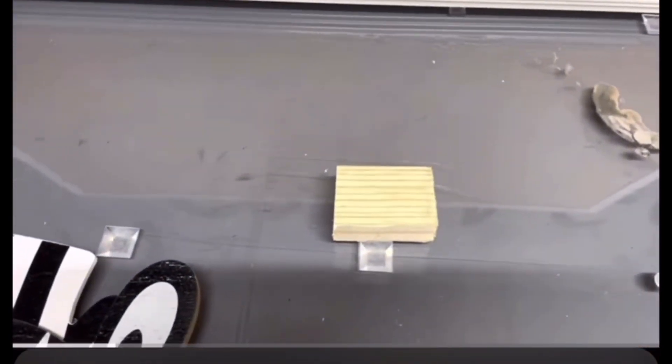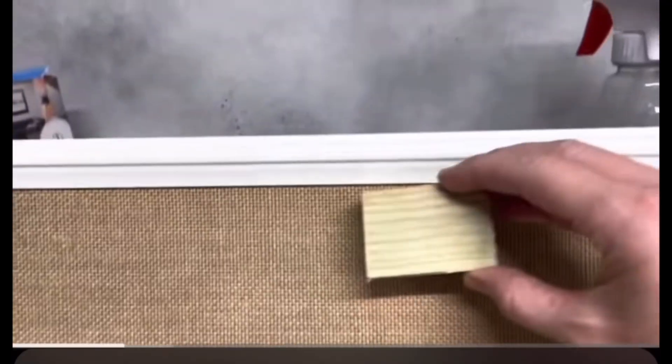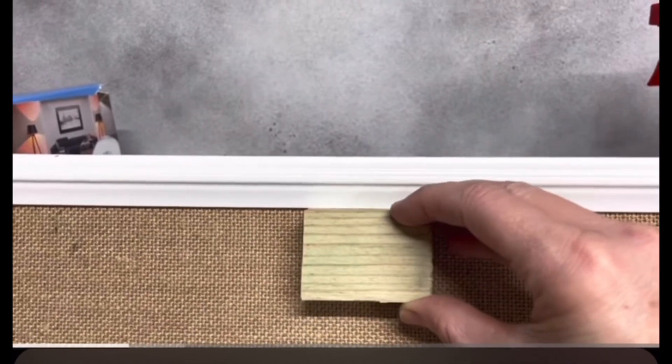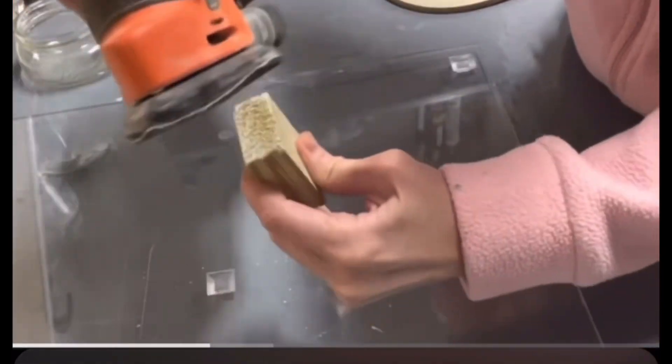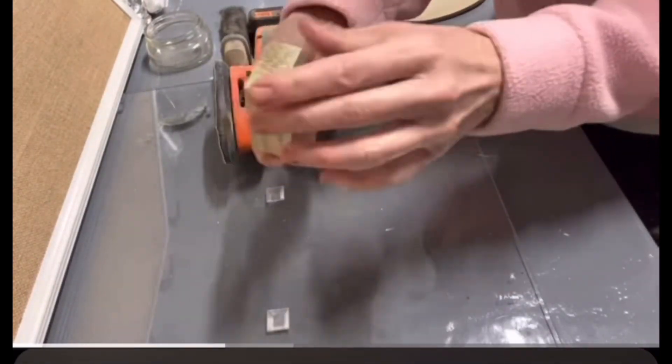I'm going to sand the edges of the wood and then adhere it to the top of the board here. You can save yourself time as you really don't have to sand a little piece of wood, but I have the sander out, so why not?